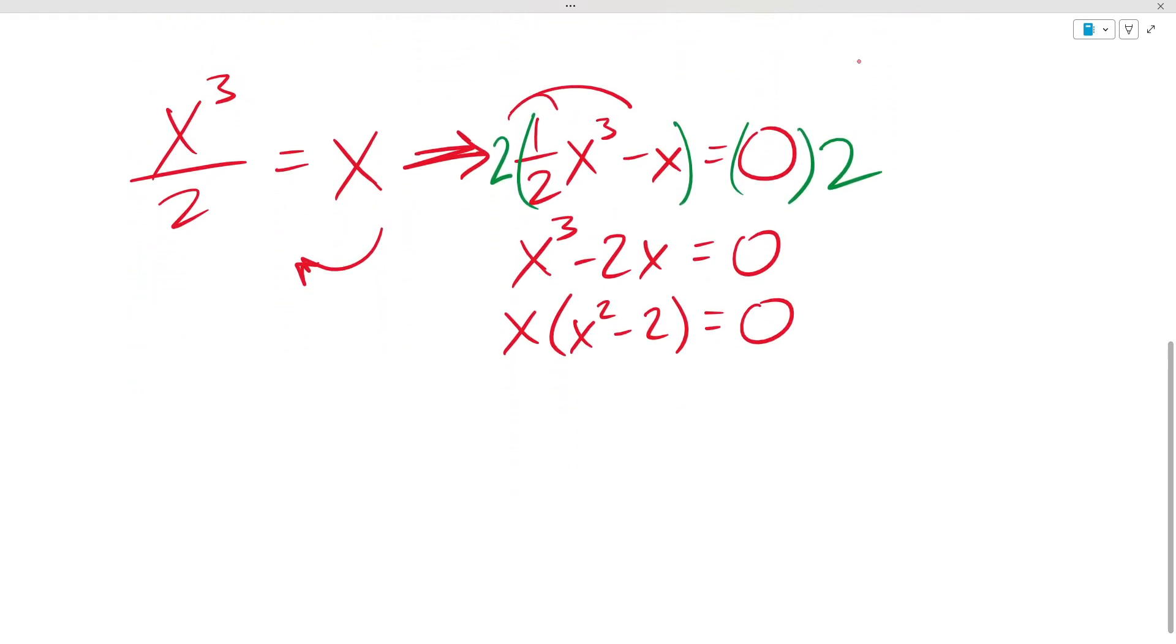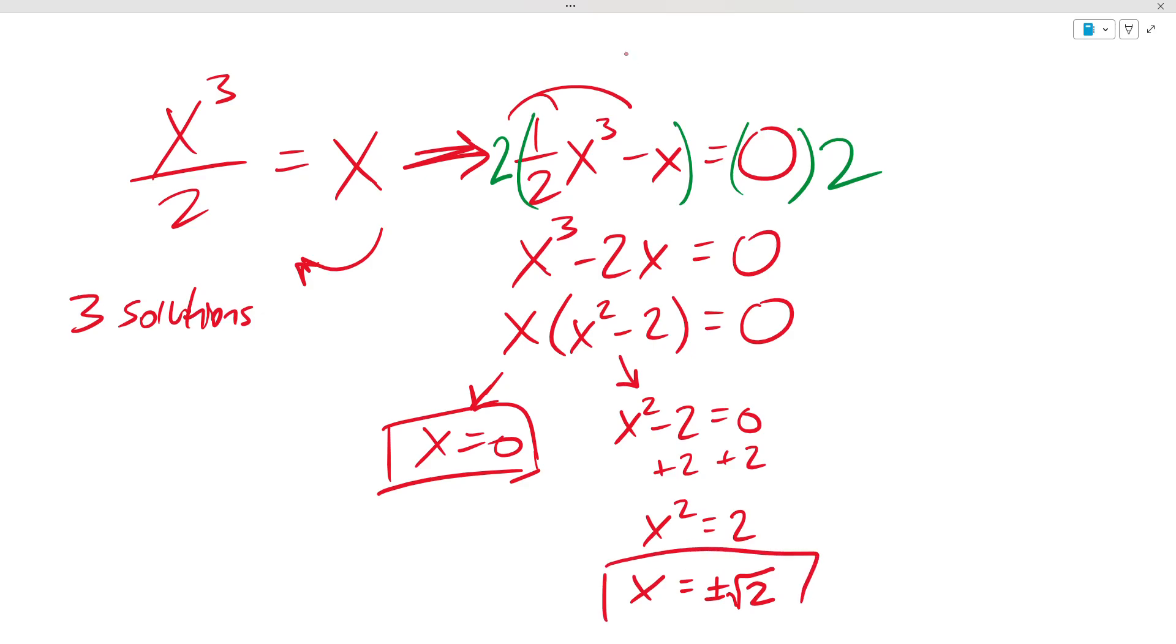Solving this, we can use the zero product rule and split this up. Either x equals zero - that's one possible solution for this cubic, which by the way, because of the fundamental theorem of algebra, is going to have three solutions. If we take the other part, which is a quadratic now, x squared minus two, and set that equal to zero and solve by adding two to both sides, we get x squared equals positive two, and x is equal to positive or negative the square root of two. So those are our three solutions: positive root two, negative root two, and zero.